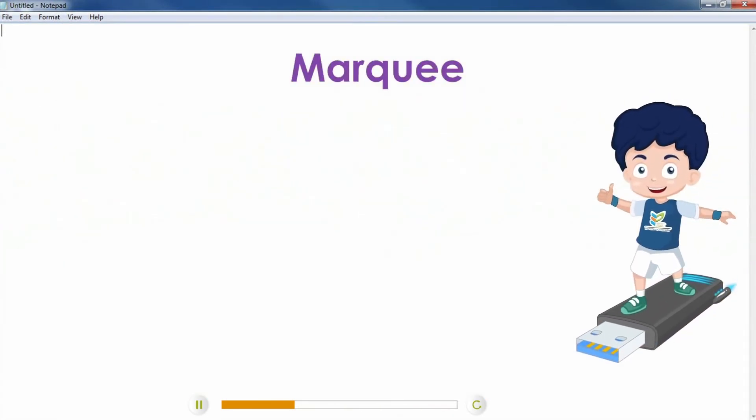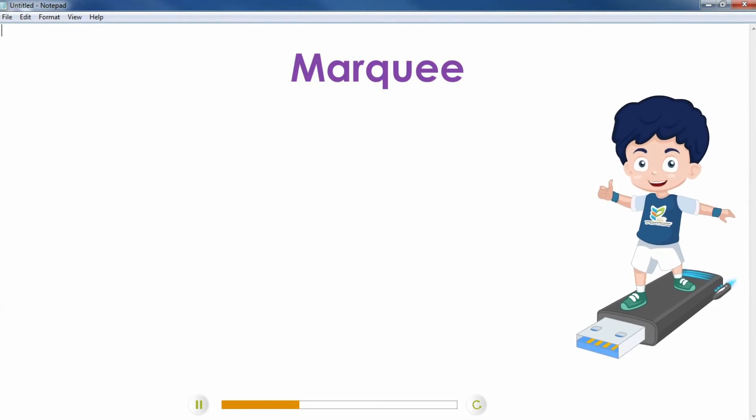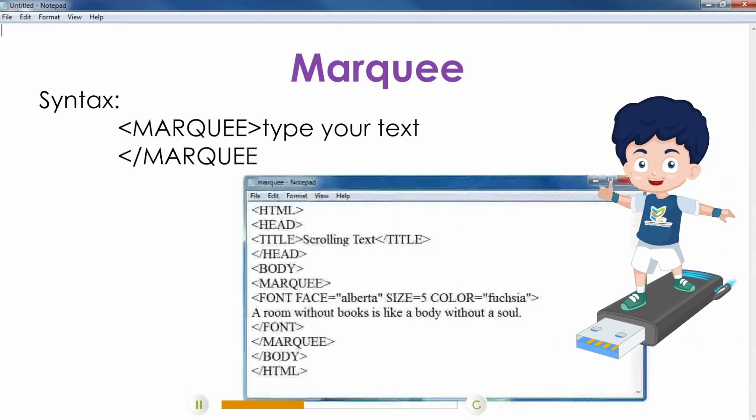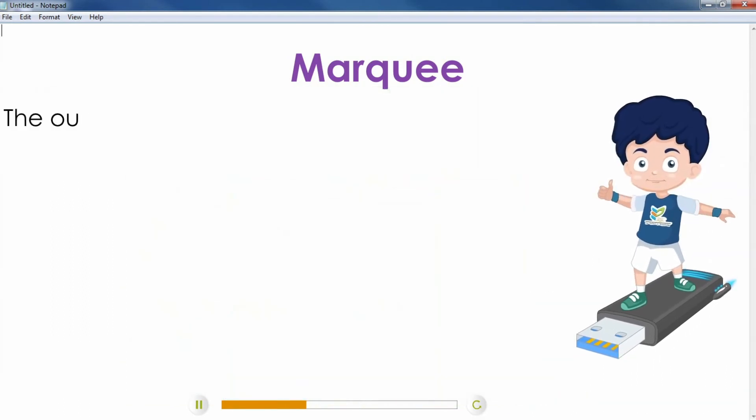Marquee: Marquee tag allows you to create text scrolling in your HTML document. Syntax: Marquee, type your text, slash marquee.